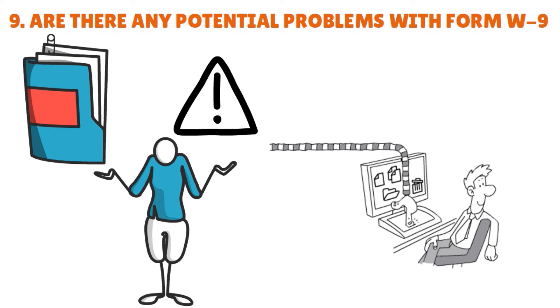Don't send your completed W-9 as an unsecured or unencrypted email attachment. Always use a secure method of delivery — something like hand delivery, U.S. mail, or an encrypted file in an email.